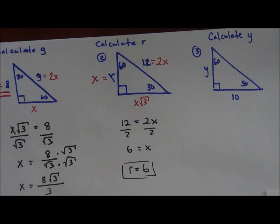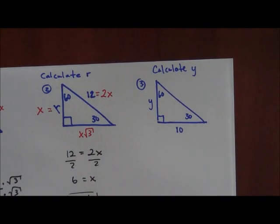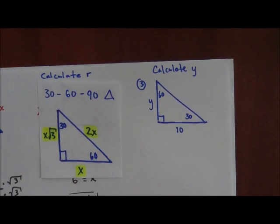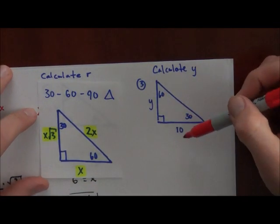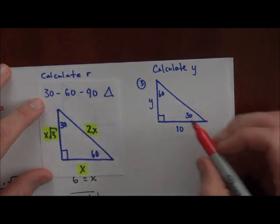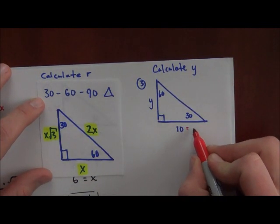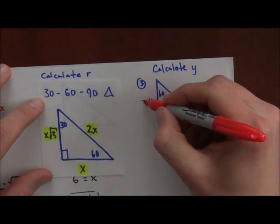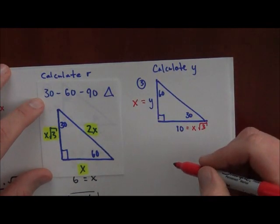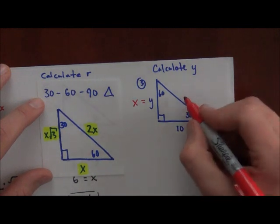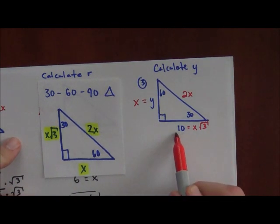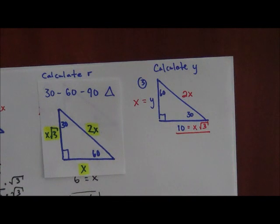On to a tougher one. Using the 30-60-90 tool: across from the 60 is X√3, which equals 10, so 10 = X√3. Across from the 30 is X, so Y = X. Across from the 90 is the hypotenuse, 2X. I pick the equation that lets me solve for X, which is 10 = X√3.